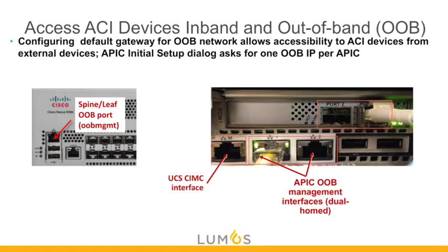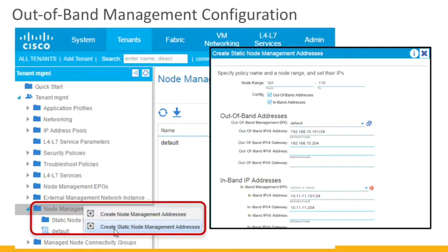If you have an RMA issue — for example, a hard drive or DIMM goes bad — rather than RMAing the individual component, they usually replace the entire device. We have the option for out-of-band or in-band interfaces and can configure both simultaneously. However, we recommend doing one or the other, because ACI will prefer in-band management interfaces. So if you're trying to get NTP to work over out-of-band, it may not work if both are configured. Out-of-band interfaces are the more common choice.